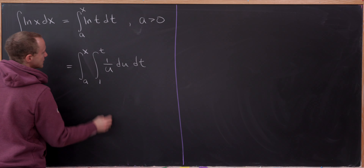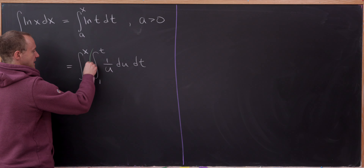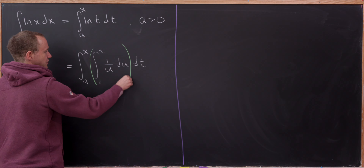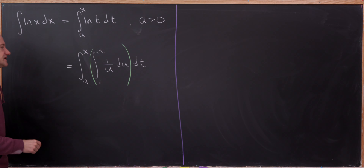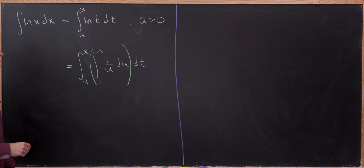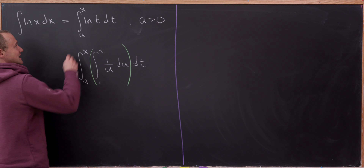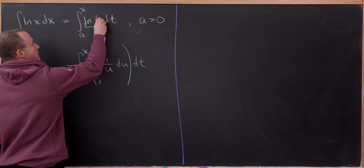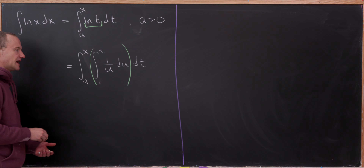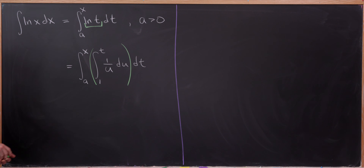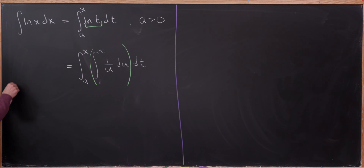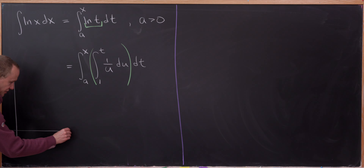Let's include a little bit of color coding. Notice I'm putting these green parentheses around the integral from 1 to t of 1 over u du — that's the integral representation of the natural log of t. What makes this whole thing work is doing a change of order of integration.